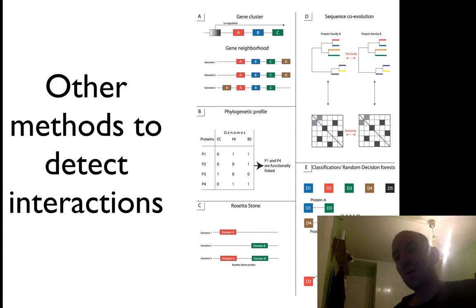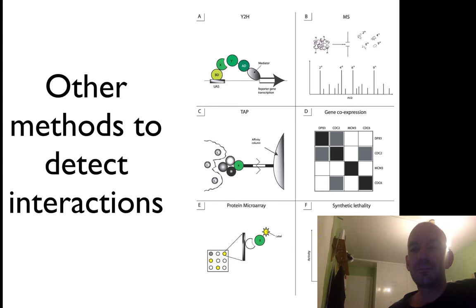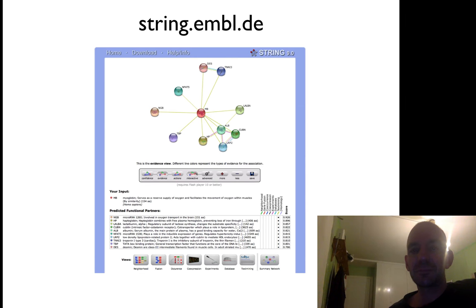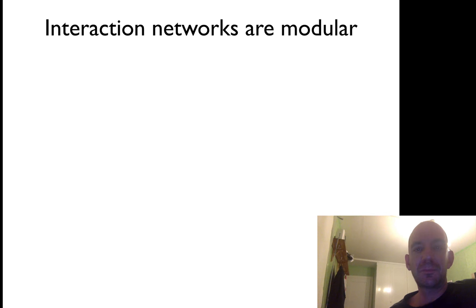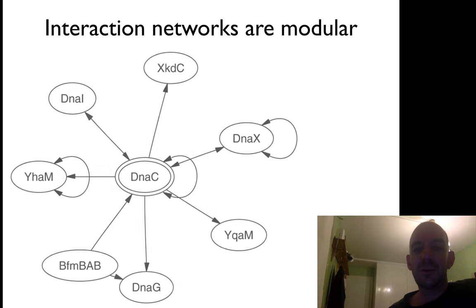There are also other methods to identify interactions. Some of these are called gene clusters or gene neighborhoods, phylogenetic profiles, and co-evolution methods. These are not experimental methods but use genetic information. Actually, if you combine these together in STRING, you get much better performance. That's why STRING integrates all this data.